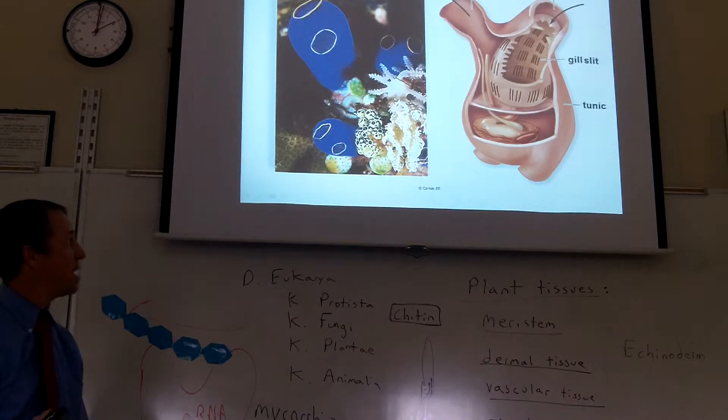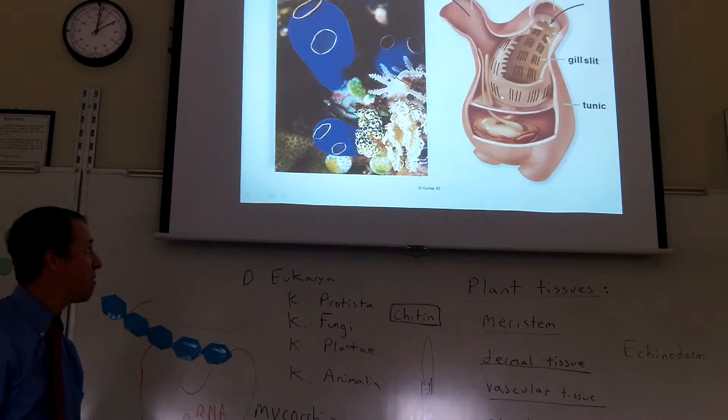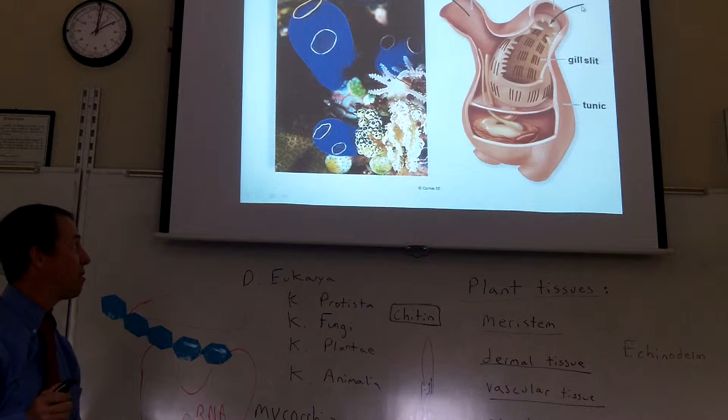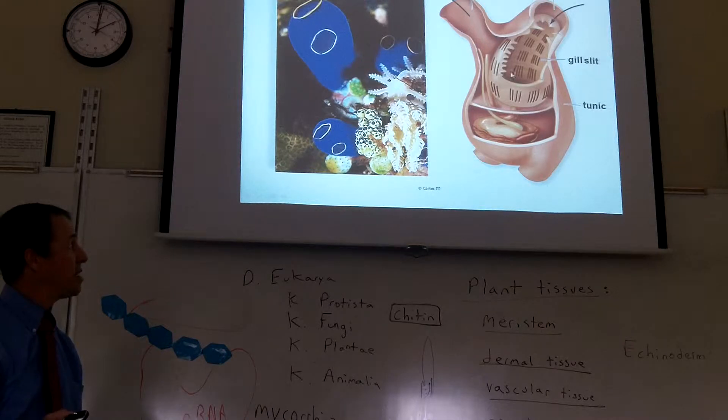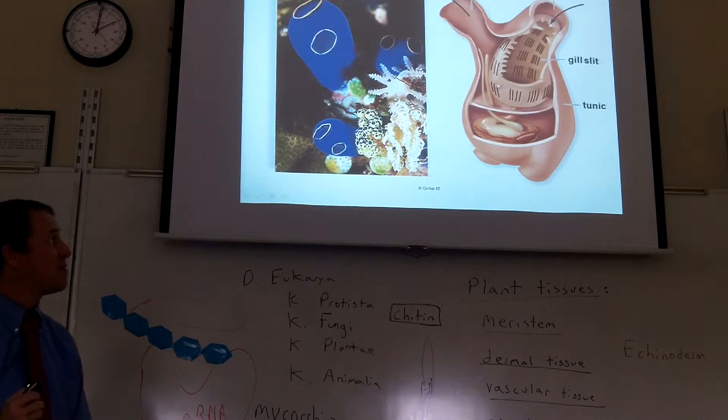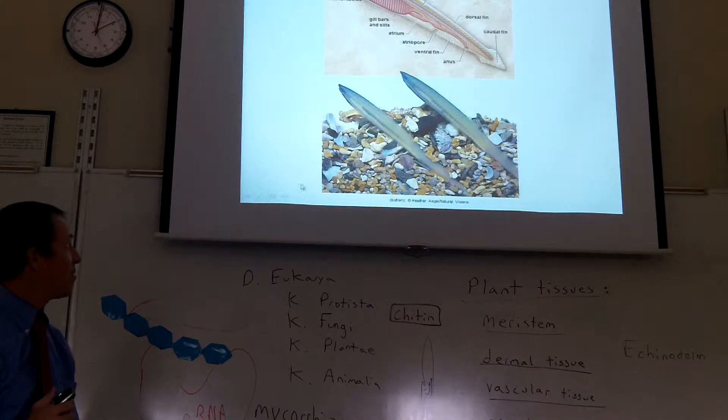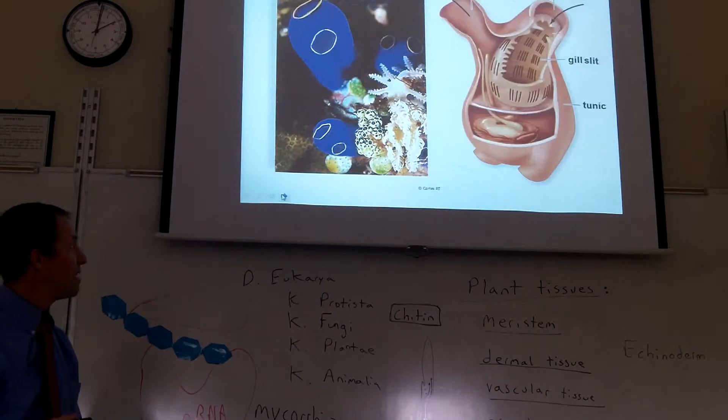And they're filter feeders. They take in water in one siphon and shoot it out in the other and just filter feed. And all the other characteristics, the tail and the notochord, they disappear as this thing evolves. But if you were to look at one of these things when it was a baby, it would have looked almost just like this. So it's a relative of the lancelet.